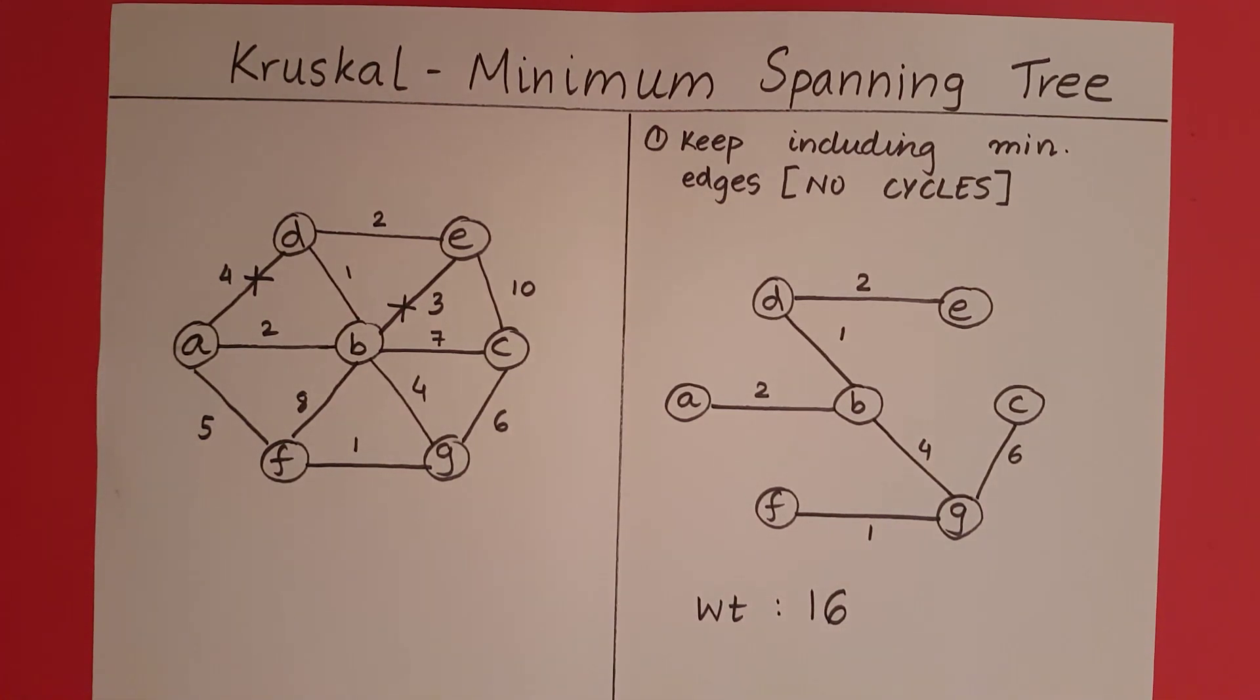So this is how you perform Kruskal's algorithm to find the minimum spanning tree given a particular graph. We keep including the next minimum edge as long as that edge does not form a cycle in our spanning tree.